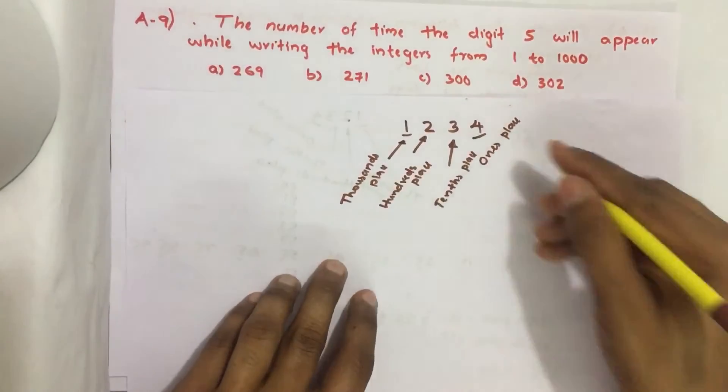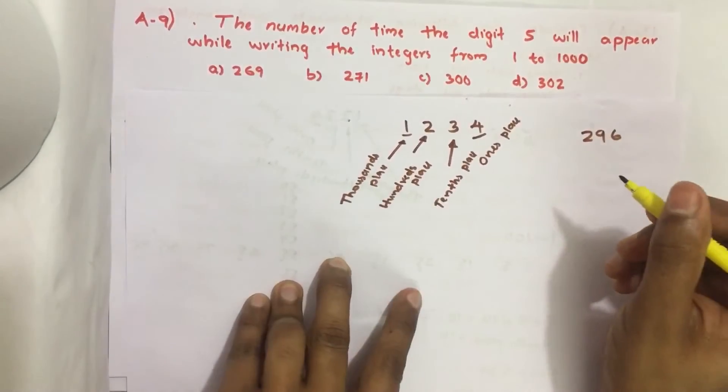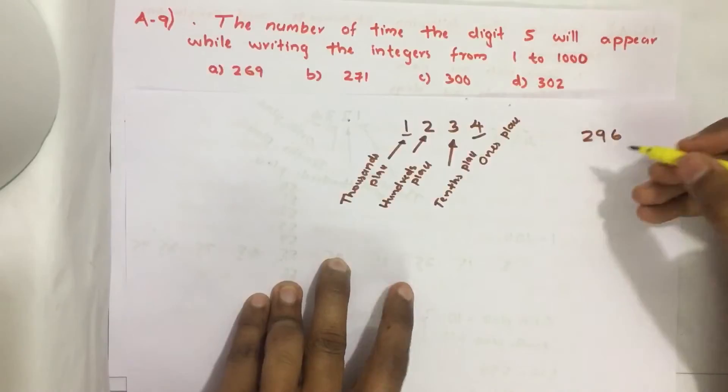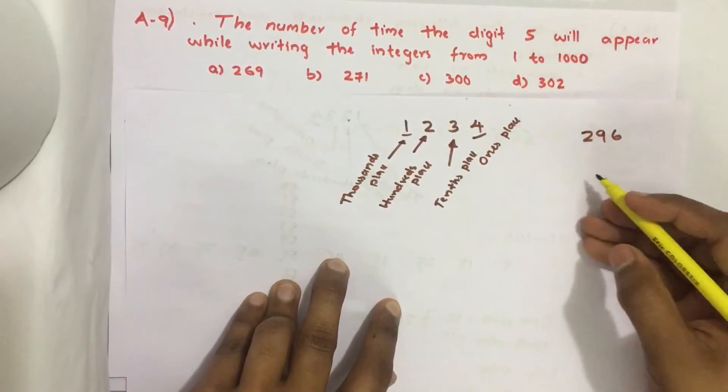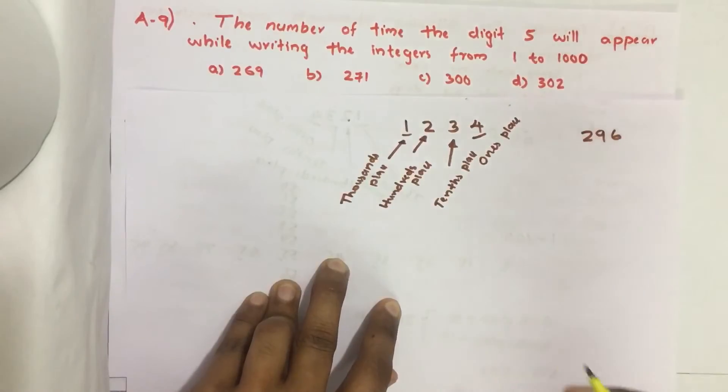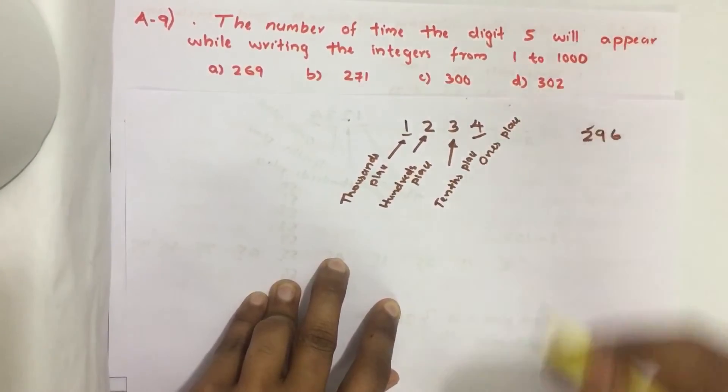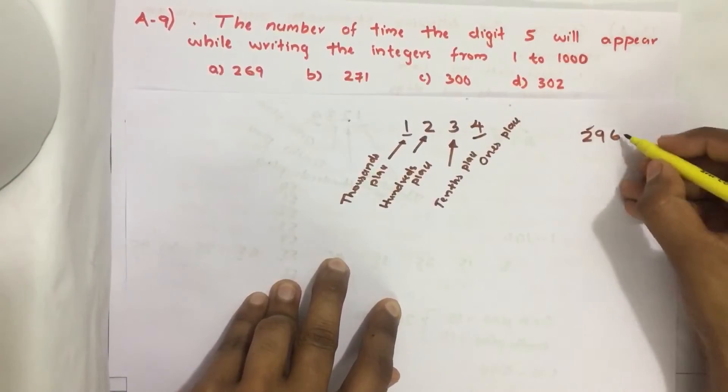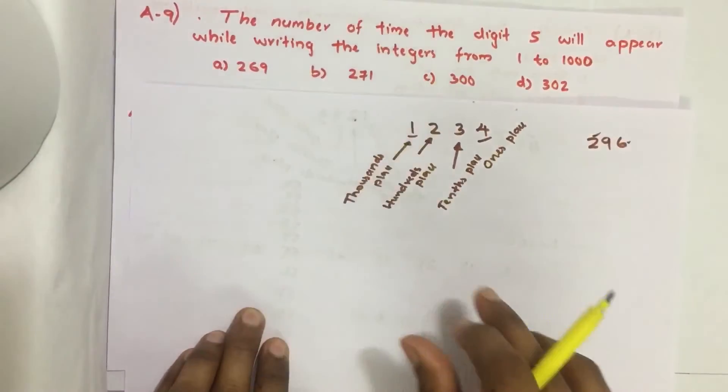Now we can take one example: 296. If somebody asks what is the digit in this number in 100's place, we can say 2. In 100's place it is 2. What is the number in 1's place? It is 6. And in 10's place it is 9. Now let us solve this question.